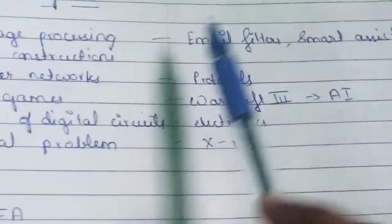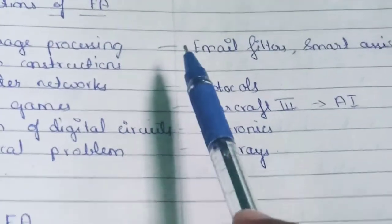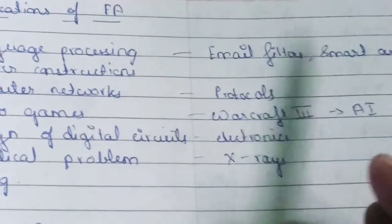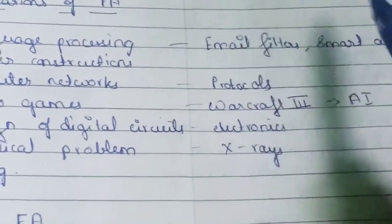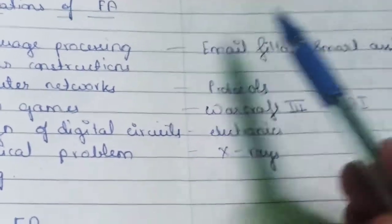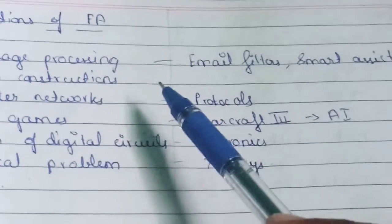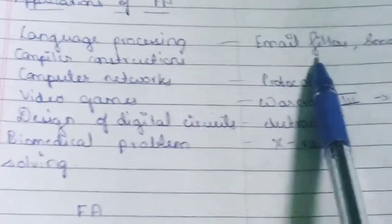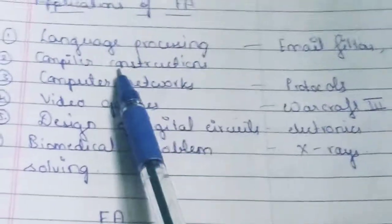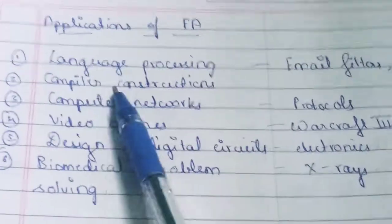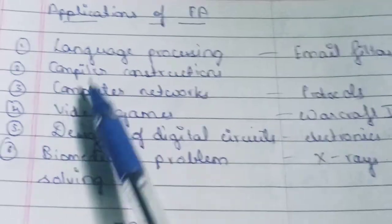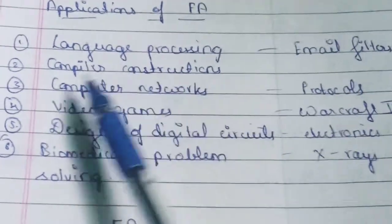Another example is smart assistants. We have come across many smart assistants nowadays, such as Amazon's Alexa, Microsoft's Cortana, Apple's Siri, and Google Assistant. All of these have evolved through the usage of language processing, which relies on finite automata algorithms.